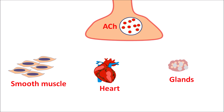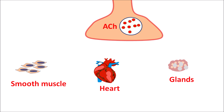The action of acetylcholine on these three targets — smooth muscle, heart, and glands — is most important therapeutically. It produces smooth muscle contraction (except vascular smooth muscle, where it causes relaxation), cardiac inhibition by reducing heart rate and AV conduction, and glandular secretion.